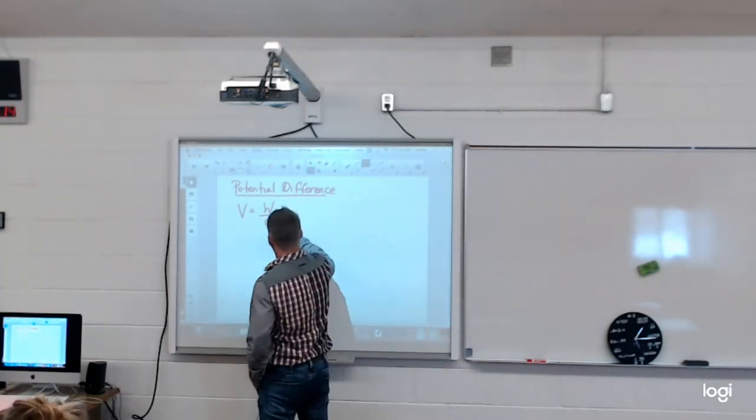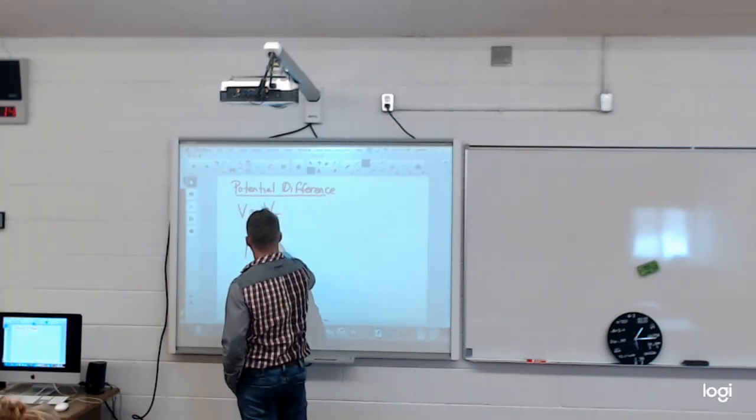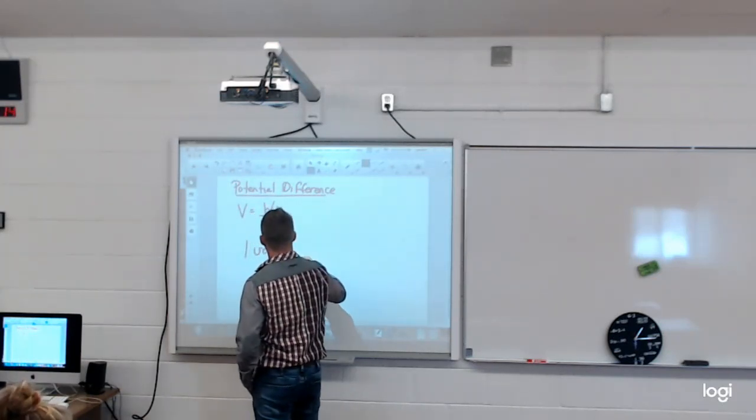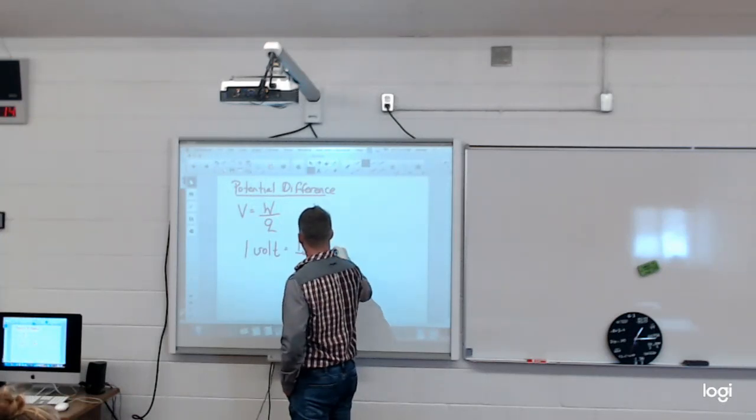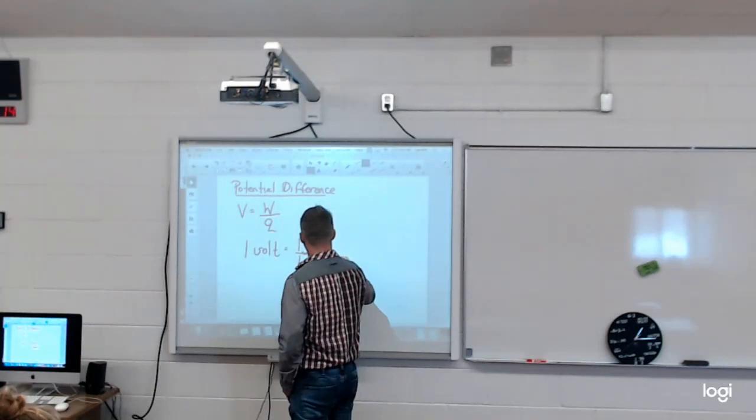So one volt of potential difference is equivalent to one joule of work over one coulomb of charge.